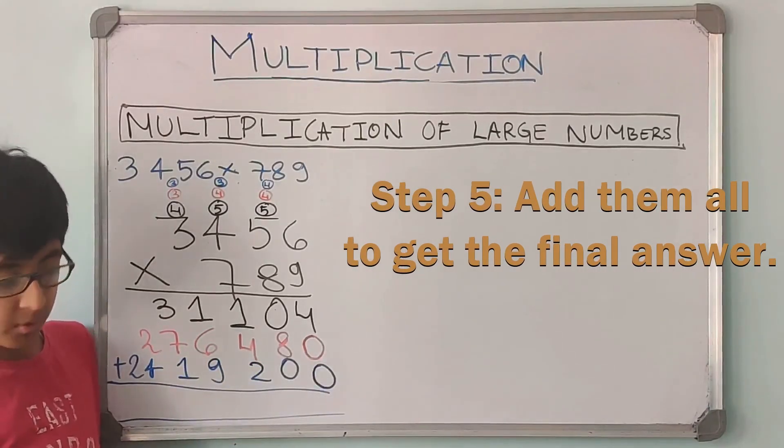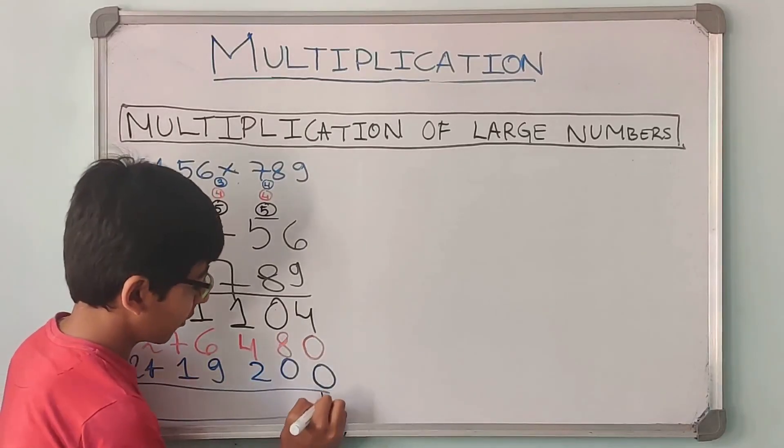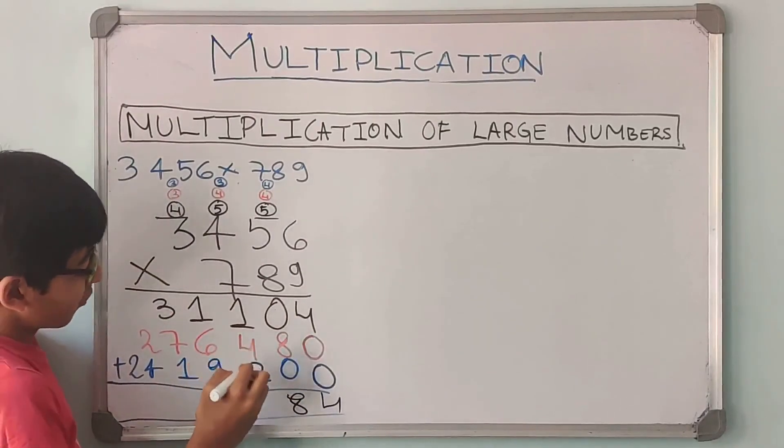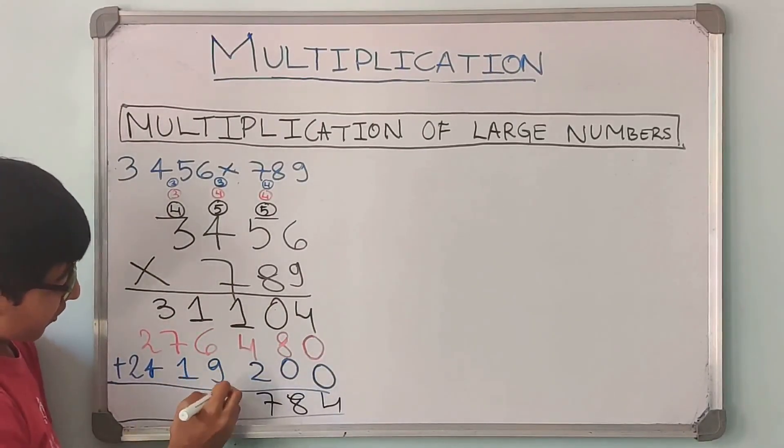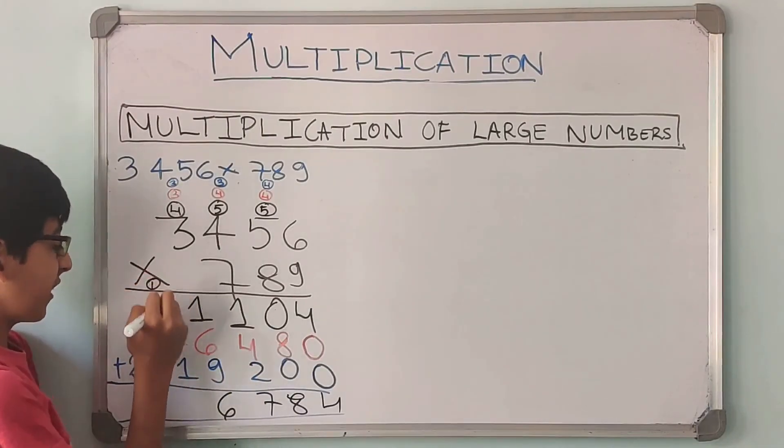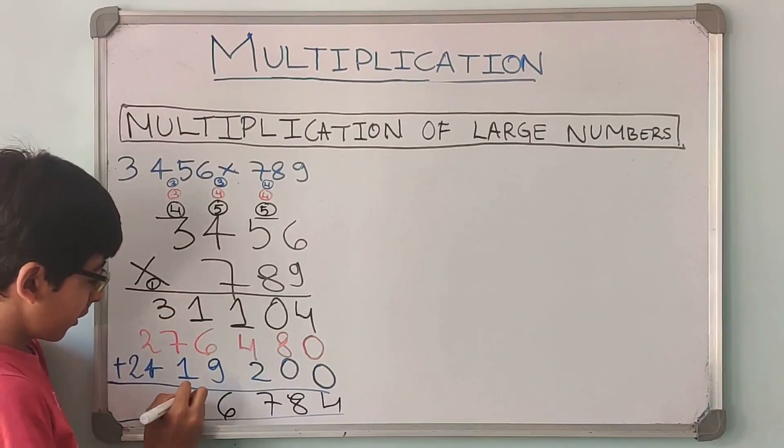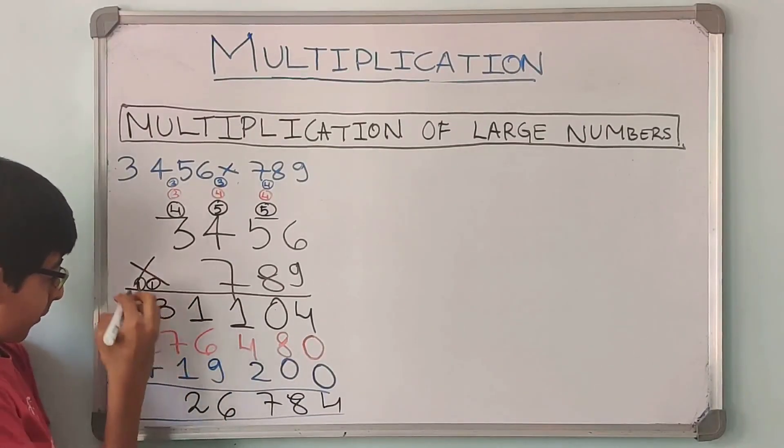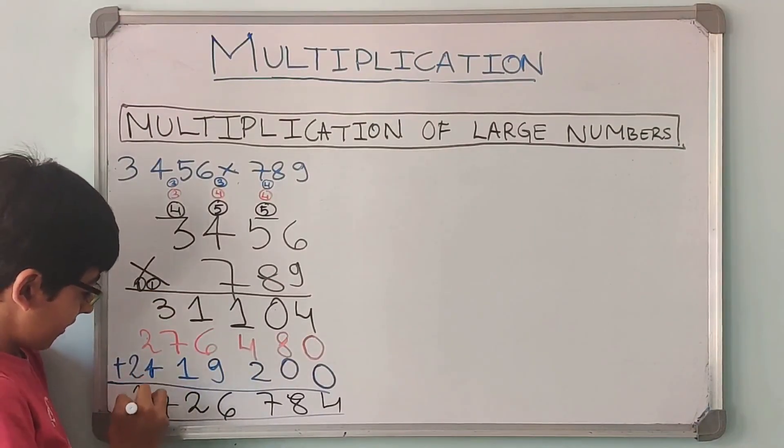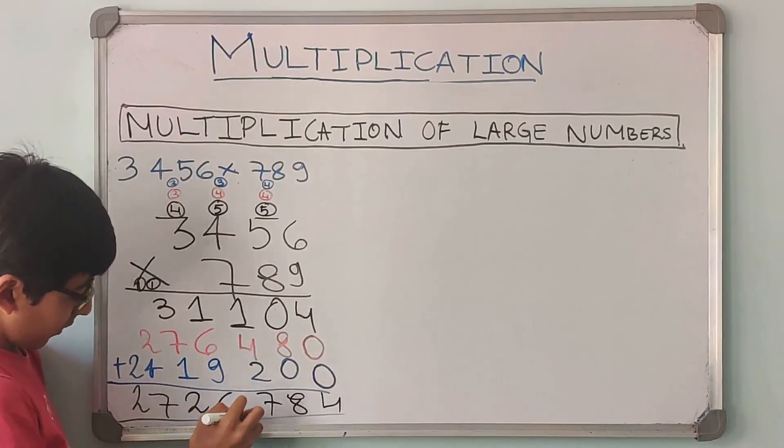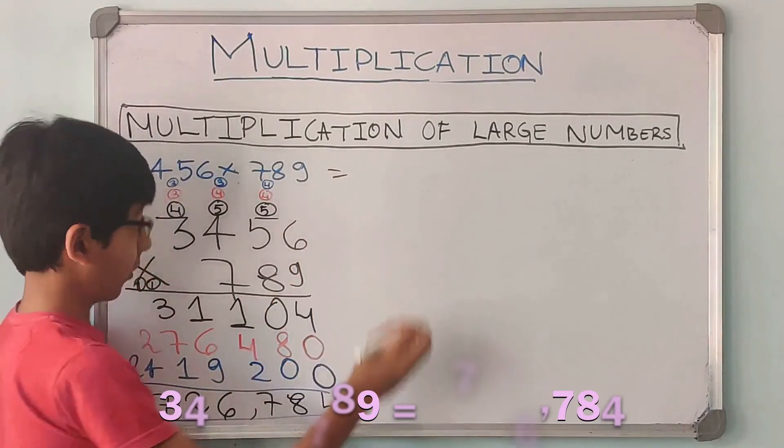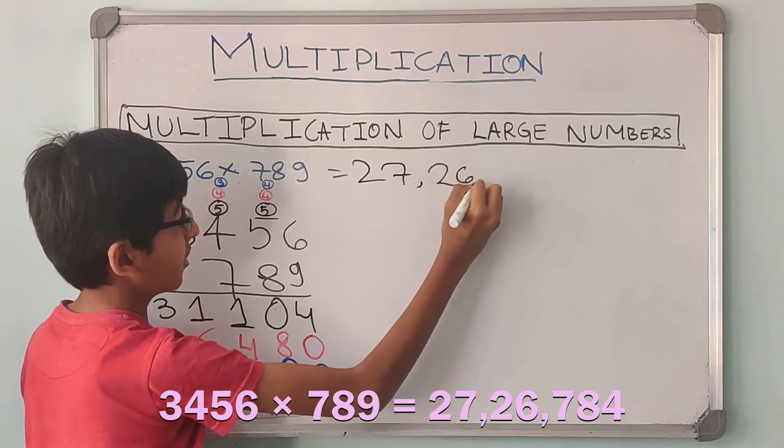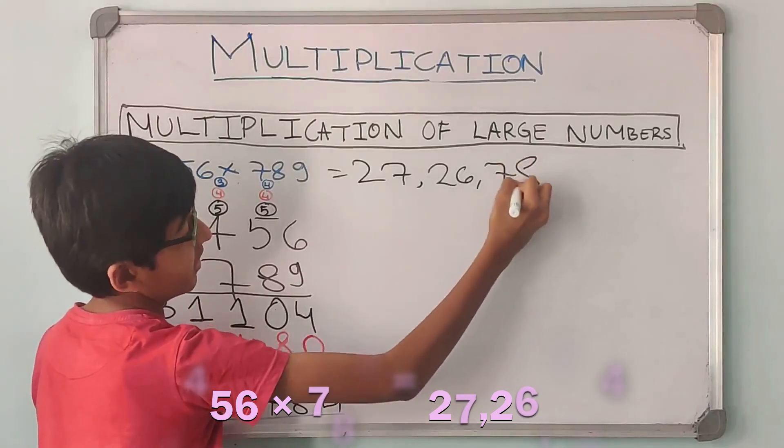So now we have got this is into 9, into 80, into 700. Now I am going to add them to get the final answer. 4 plus 0 plus 0 is 4. 0 plus 8 plus 0 is 8. 1 plus 4 is 5 plus 2 is 7. 1 plus 6 is 7 plus 9 is 16. 6 comes down, 1 carry forward. 1 plus 3 is 4 plus 7 is 11, plus 1 is 12. 2 comes down, 1 carry forward. So 1 plus 2 is 3 plus 4 is 7, and then 2. So we get our answer as 27,26,784.